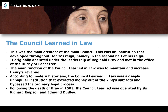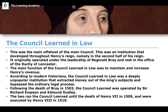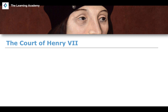Following the death of Reginald Bray in 1503, the Council Learned was operated by Sir Richard Empson and Edmund Dudley. They were deeply unpopular characters and ran the Council Learned until Henry the Seventh's death in 1509. As a result of their actions in extracting revenue from the king's subjects, both were executed by Henry the Eighth in 1510, illustrating just how deeply unpopular the Council Learned in Law actually was.